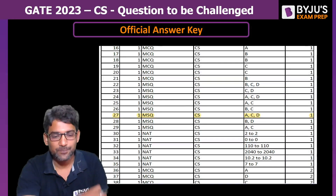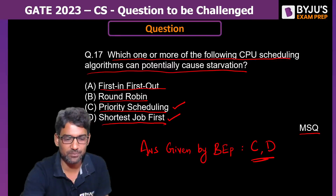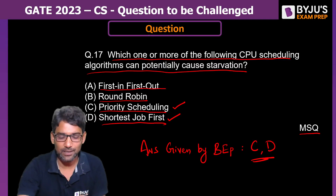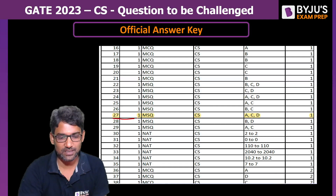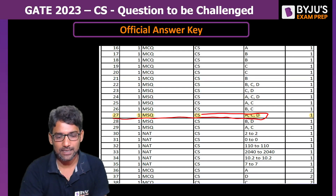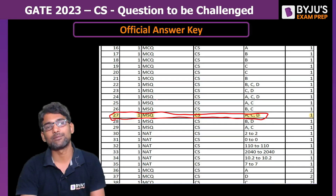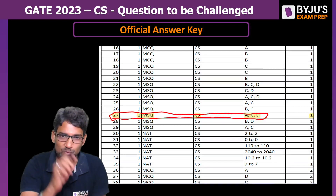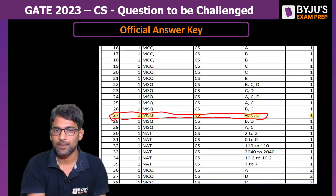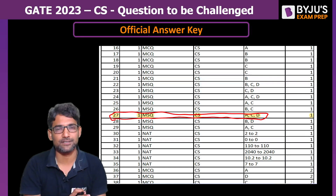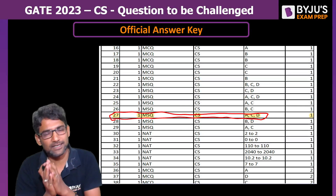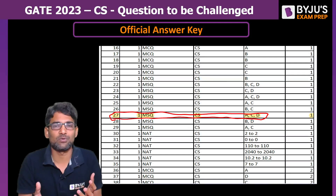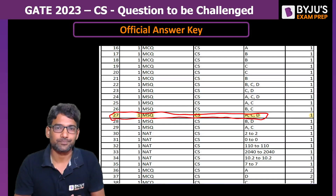As per the official answer key by IIT Kanpur, this is question number 17 from the technical section. Since there are 10 aptitude questions before it, you will find it as question number 27 in the key. The official answer given is A, C, and D — meaning First In First Out is also included. Since it is an MSQ, you must select all correct answers. Many of you might have given only C and D, so you will be unnecessarily losing marks.